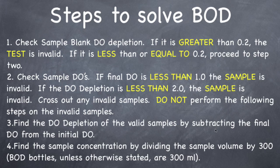Step 3: find the DO depletion of the valid samples by subtracting the final DO from the initial DO — so take your initial, subtract the final, and that's your DO depletion. Step 4: find the sample concentration — how concentrated is this sample — by dividing the sample volume by 300. BOD bottles, unless otherwise stated, are 300 mL. So on an influent sample, you would take about 6 mL of influent sample and fill the rest of the bottle with DI water to dilute it, because if you did straight influent, the BOD would deplete to almost nothing by the end of the test. That's how you find the sample concentration — divide the sample volume by 300 — and it'll be a percentage.